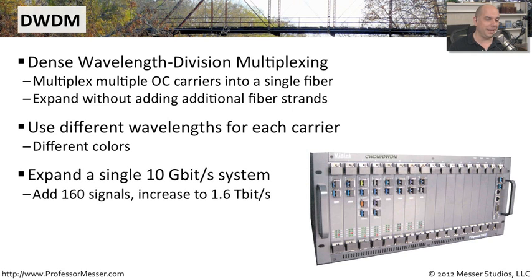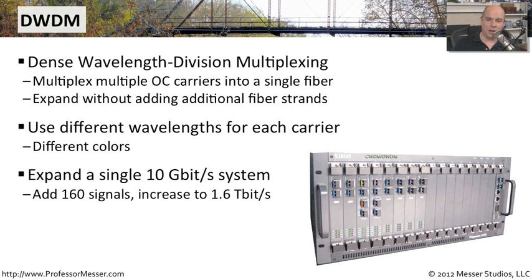For instance, a single 10 gigabit system with DWDM expanded into 160 different frequencies — different wavelengths — means you can have a single fiber sending a total throughput of 1.6 terabits per second across that single link. As you can imagine, that really provides a lot of flexibility for sending a lot of data.